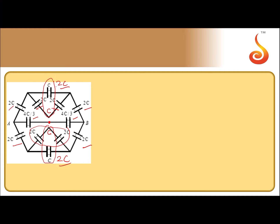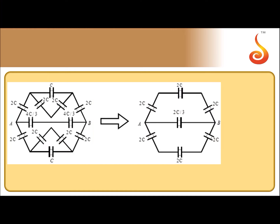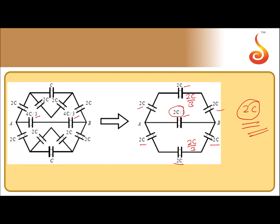The circuit reduces to three parallel branches. The 4c/3 and 4c/3 in series give effective 2c/3. The 2c, 2c, 2c in series give 2c/3 for the upper part, 2c/3 for the lower part, and the central one is also 2c/3. All three are in parallel, so effective capacitance equals 2c. Notice that we used theorem number 1 to arrive at this solution. Effective capacitance is 2c.